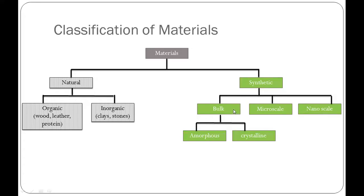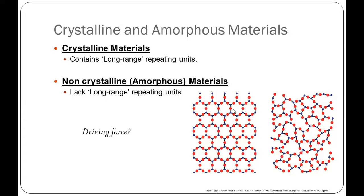Bulk materials can be further classified either as amorphous materials or crystalline materials. In today's topic I will discuss crystalline materials in particular. As you all know, anything that can maintain its shape or volume over time is known as a solid. In solids the atoms are packed very close together.